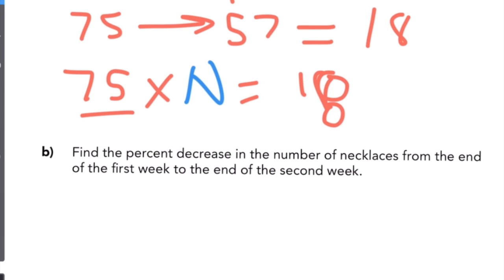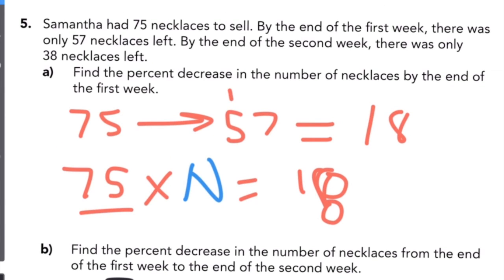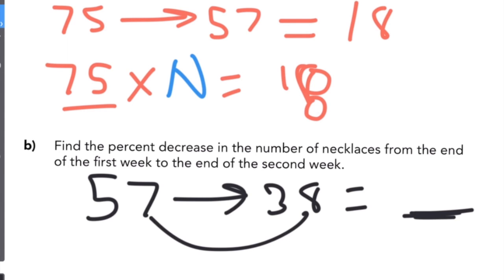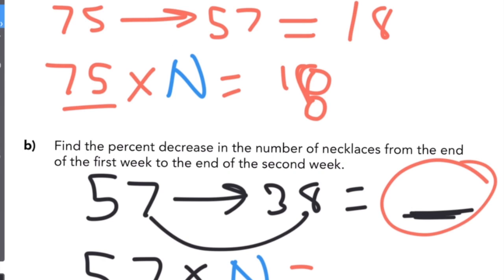The second part says find the percent decrease from the end of the first week to the end of the second week. At the end of the first week she had 57, and at the end of the second week she had 38. It's the same type of problem — find the difference first. Then take 57, times it by the unknown percent n, and that equals the difference. Solve for n.